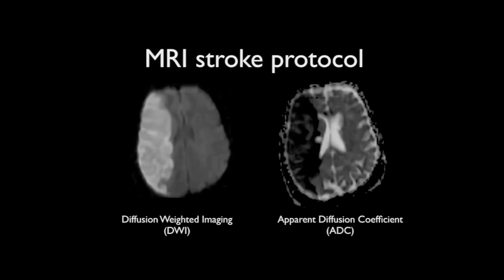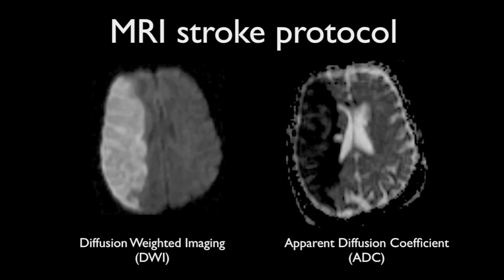MRI is extremely sensitive to acute ischemia, with changes seen on diffusion-weighted imaging and apparent diffusion coefficient maps within a few minutes of onset. These appear as bright areas on diffusion and dark areas on ADC maps. However, MRI is usually not used in the very acute setting as it imposes too great a delay in attempting to treat the patient, either with intravenous thrombolysis, intra-arterial thrombolysis, or mechanical thrombectomy.